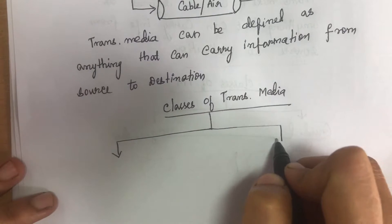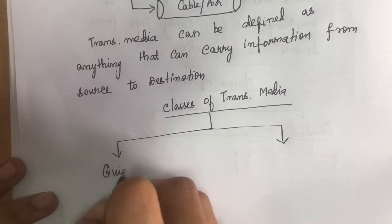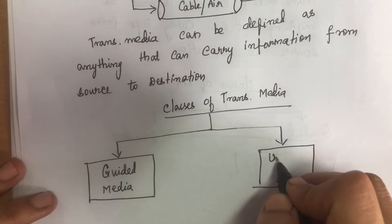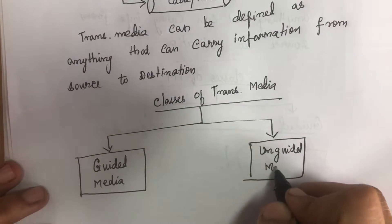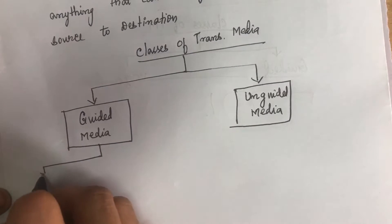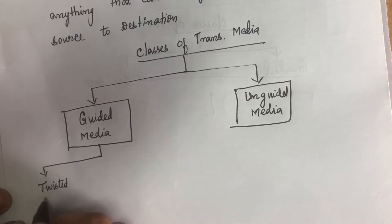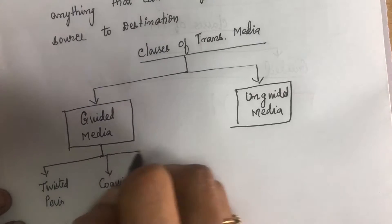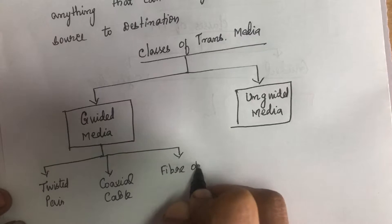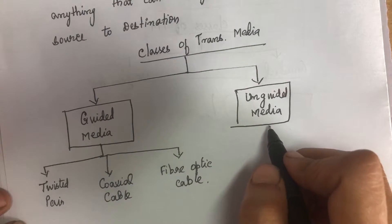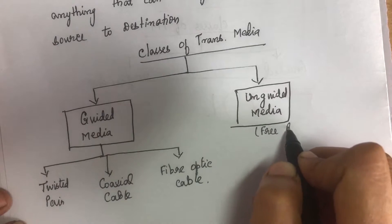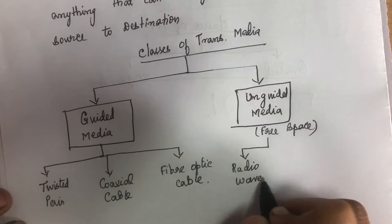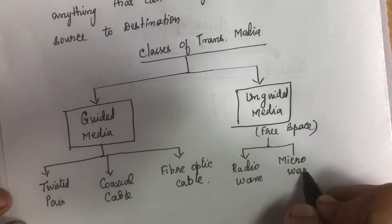Transmission media is broadly classified into two types: one is guided media and the other one is unguided media. Guided media is again classified into twisted pair, coaxial cable, and fiber optic cable. Unguided media is free space, and it is classified into radio wave, microwave, and infrared wave.